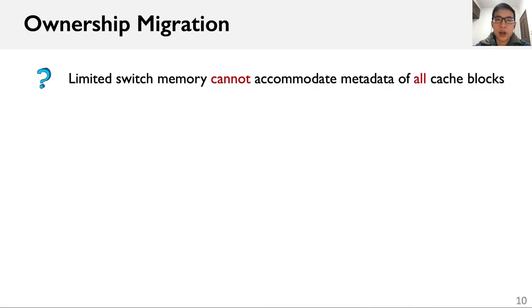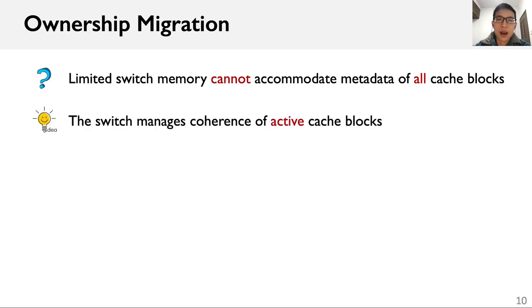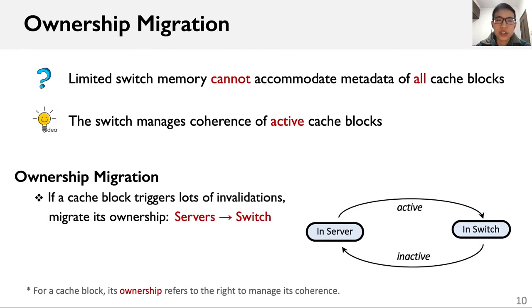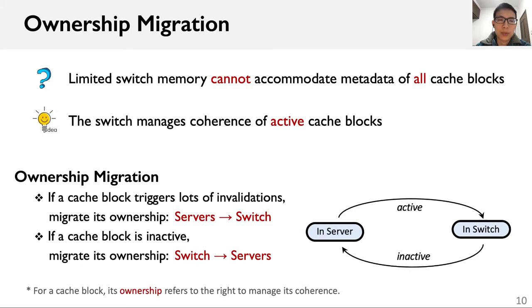To address the problem of limited switch memory, Concordia only lets the switch manage coherence of active cache blocks via ownership migration. For a cache block, its ownership refers to the right to manage its coherence. Specifically, if a cache block triggers a burst of invalidations, we migrate its ownership from the servers to the switch. In contrast, if a cache block is inactive, we migrate its ownership from the switch back to the servers.